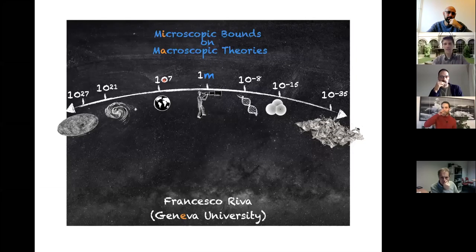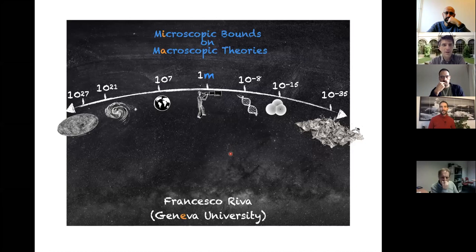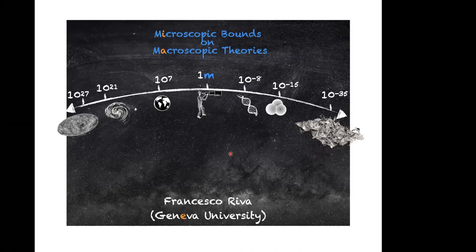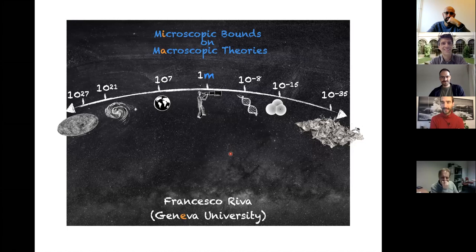Welcome everybody to the Newton 1665 seminar series. Today we'll have two talks on theoretical constraints on effective field theories. Our first speaker is Francesco Riva, who will tell us about positive moments for scattering amplitudes, or 'Microscopic Bounds on Macroscopic Theories.'